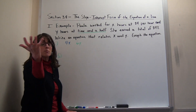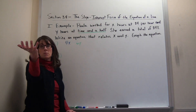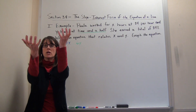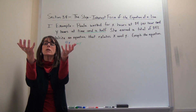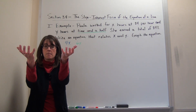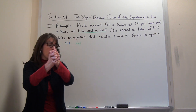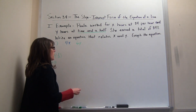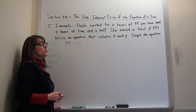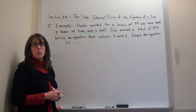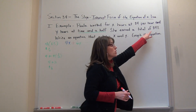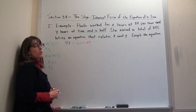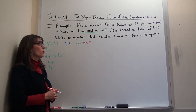So we have two amounts of money: 4x represents the straight time pay and 6y represents the overtime pay. We put them together by addition, and when we add them up we should get her total of $48 for the day. So here's the equation that represents that situation: 4x + 6y = 48, and we need to graph that equation.